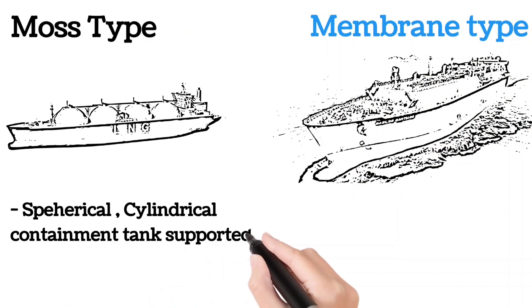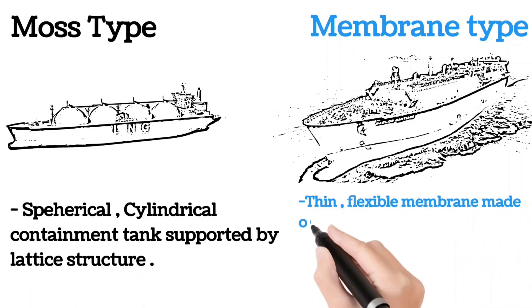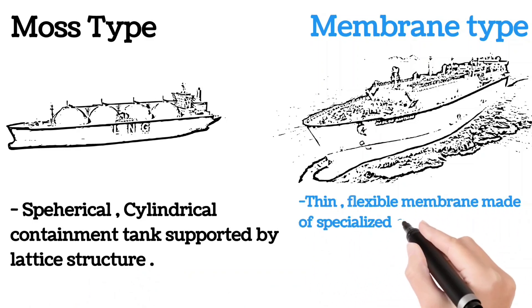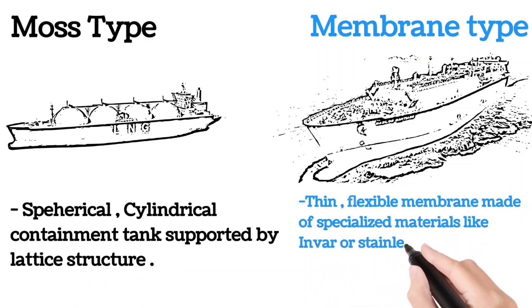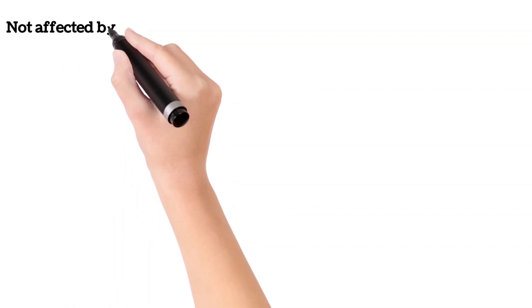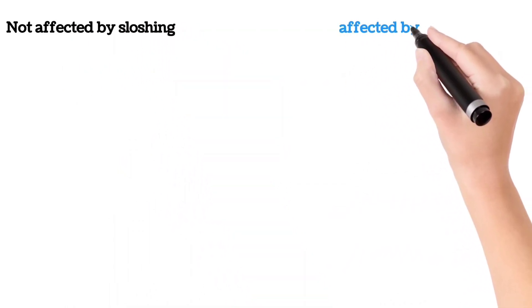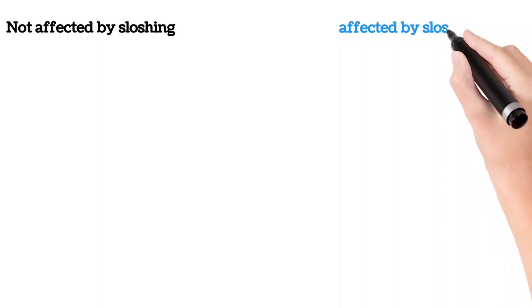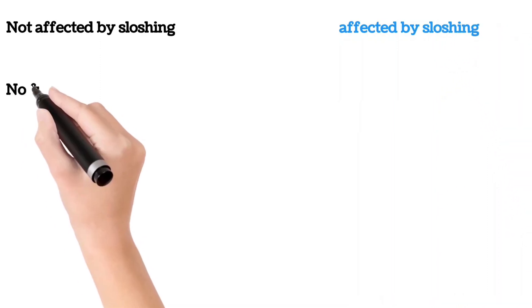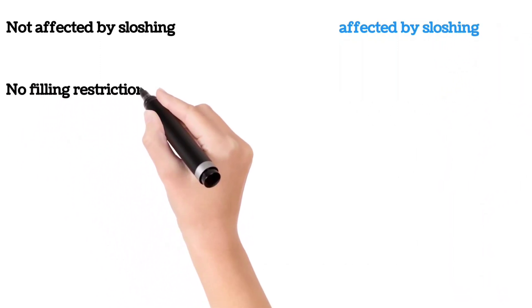In membrane type, they have a thin flexible membrane made up of specialized materials like Invar or stainless steel, supported by a secondary barrier. The MOZ type is not affected by sloshing whereas the membrane type is affected by sloshing. There are no filling restrictions in MOZ type whereas membrane type has filling restrictions.